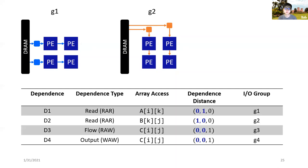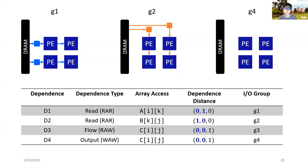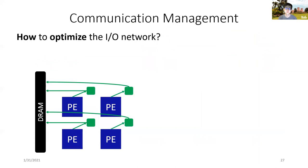For the last group, G4, the dependence distance is 0,0 as well. However, for such a case, as the dependence is the output dependence associated with the data to be written out to the external memory, we will need to allocate I/O modules for draining out the data from each PE.